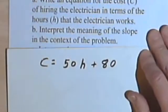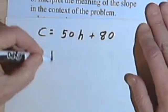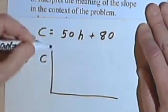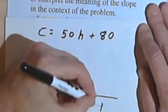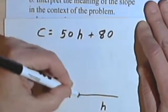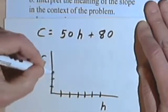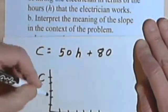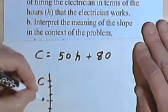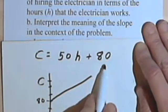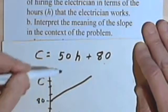It says interpret the meaning of the slope in the context of the problem. Let's look at a rough graph. We can take c as the vertical axis — the dependent variable — and h, the number of hours, as the horizontal axis, the independent variable. We know the vertical intercept is 80 and the slope is 50.